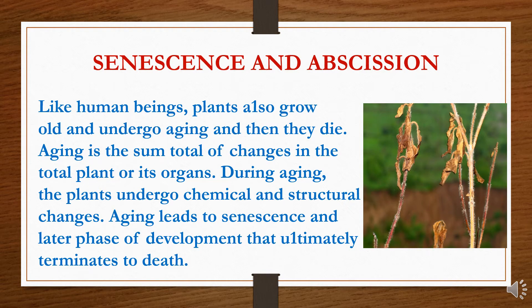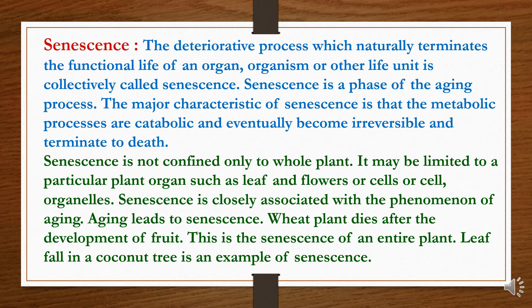In this chapter, we will discuss about abscission and senescence. Like human beings, plants also grow old and undergo aging and then they die. Aging is the sum total of changes in the total plant or its organs. During aging, the plants undergo chemical and structural changes. Aging leads to senescence — a later phase of development that ultimately terminates to death. Senescence is the deteriorative process which naturally terminates the functional life of an organ, organism, or other life unit. Senescence is a phase of the aging process.